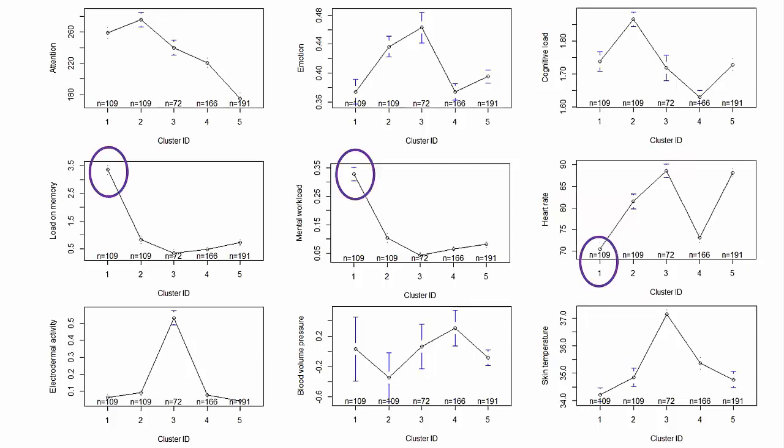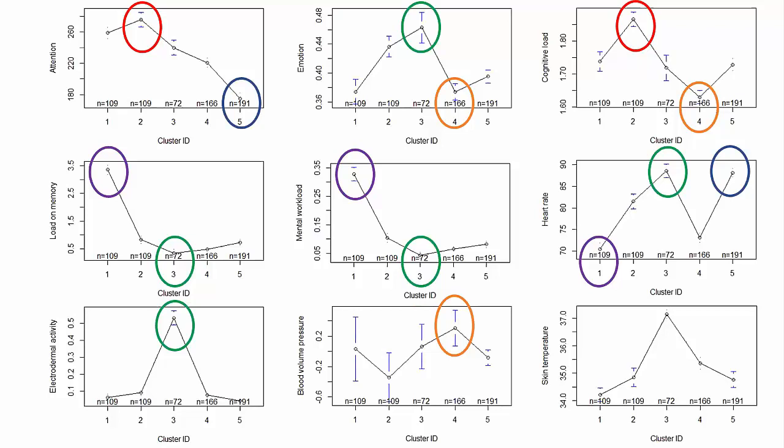We did this exercise for all the clusters and all the variables. And we came up with the cluster definitions as follows. For example, cluster one has high mental workload, high load on memory and low heart rate. Cluster two has high attention and high cognitive load. Cluster three has high electrodermal activity, high emotional intensity, high heart rate, low mental workload and low load on memory. Cluster four has low emotional intensity, low cognitive load and high blood volume pulse. Cluster five has low attention and high heart rate.